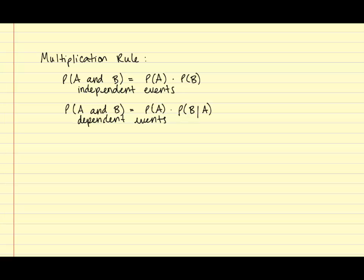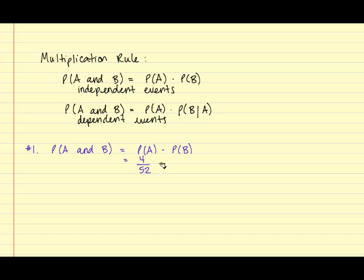So let's look at problem number one. We're trying to find the probability of A and B. Since the cards are being selected with replacement, we're putting the card back into the deck. When we find the probability of the second event, we're working with a full deck of cards. Therefore, we're going to use the first formula because the probability of the second event is not affected. The probability of A is selecting a king — there are four kings in the deck, so that's four out of 52. We then put the card back and select a queen — four queens out of 52 cards, so that's four out of 52.